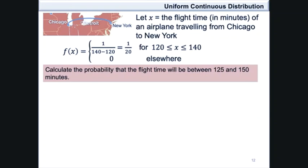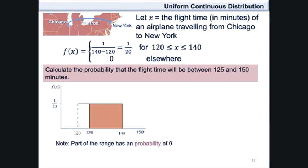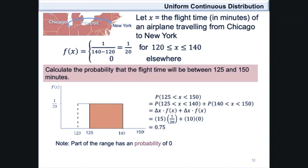Now calculate the probability that the flight time will be between 125 and 150 minutes. This can be indicated on the graph as the shaded area between 125 and 140. The part of the range outside the defined interval has a probability of 0. Therefore, the probability of x between 125 and 150 equals the probability of x between 125 and 140, plus the probability of x between 140 and 150.